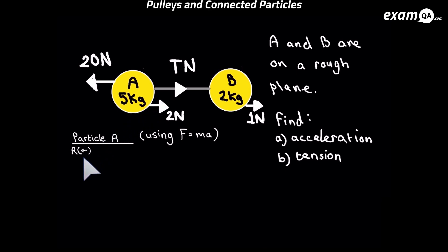So here I've written R with the arrow to the left. That's just to tell the examiner that I'm resolving my forces, and left is positive. To resolve the forces, we're going to use F equals MA, force equals mass times acceleration.